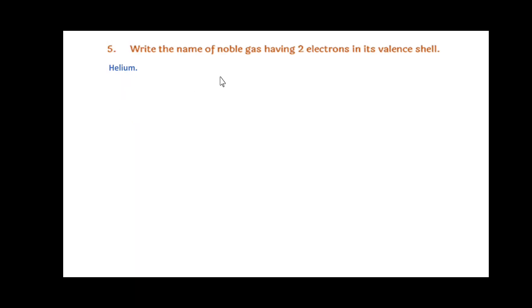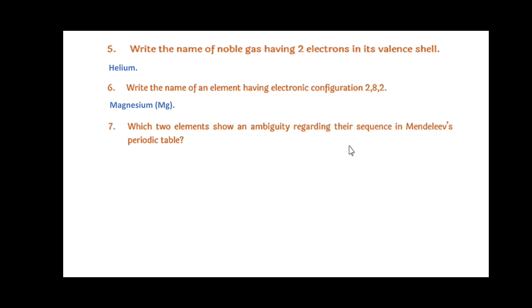Write the name of the noble gas having two electrons in its valence shell: helium. Write the electronic configuration 2,8,2, that is magnesium Mg. Which two elements show ambiguity regarding their sequence in Mendeleev's periodic table? Cobalt and nickel. Since beryllium, magnesium, and calcium are in group 2, what will be their valency? Valency is 2.